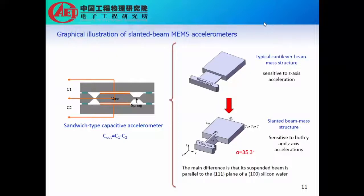This is a typical sandwich type capacitive accelerometer. Here we have a proof mass, supporting spring, and two sensing capacitors. When an acceleration in a vertical out-of-plane direction is applied, the proof mass will move upward or downward, and it will produce a signal proportional to the applied acceleration. This working principle is simple.